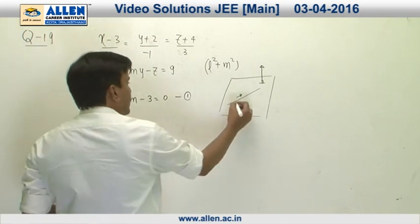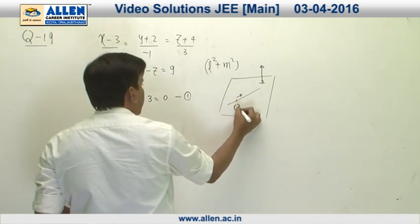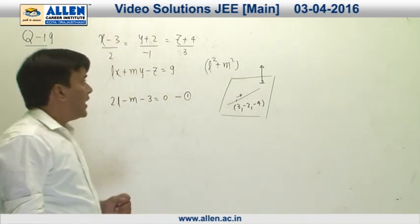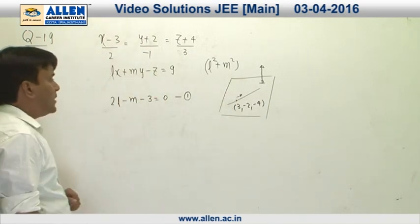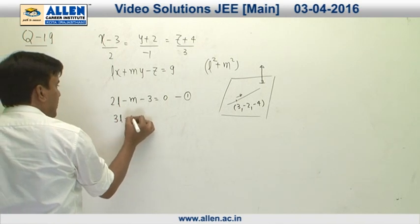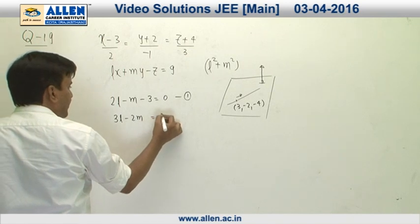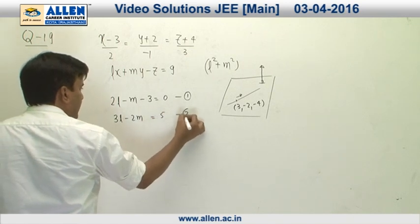The second point we can notice is that this point, that is 3 comma minus 2 comma minus 4, lies on this plane. Hence this is going to be satisfying this equation. So this is 3l minus 2m plus 4, and that is going to be 5. This is equation 2.